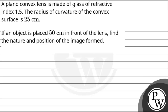Let's read this question. The question says a plano-convex lens is made of glass of refractive index 1.5. The radius of curvature of the convex surface is 25 cm. If an object is placed 50 cm in front of the lens, find the nature and position of the image formed.